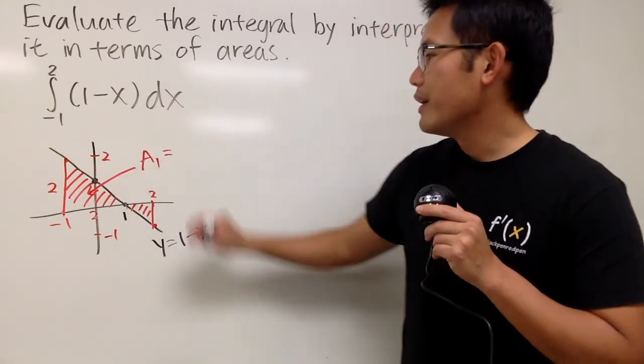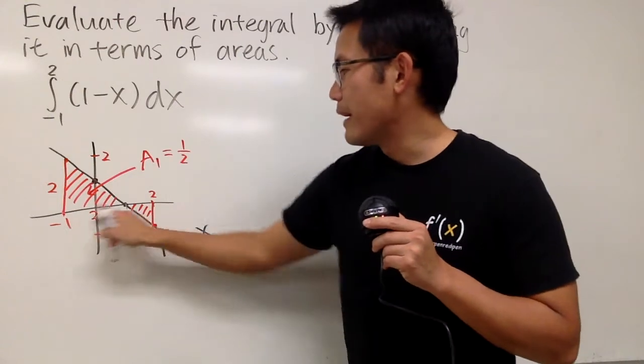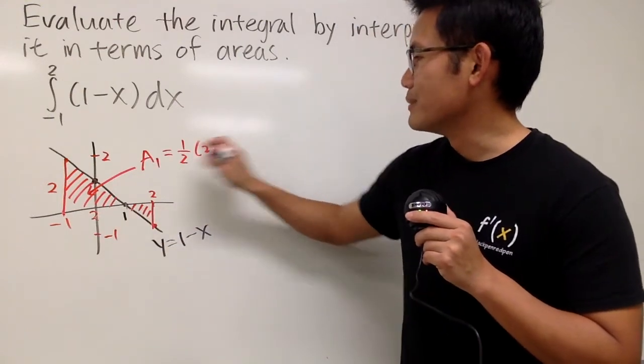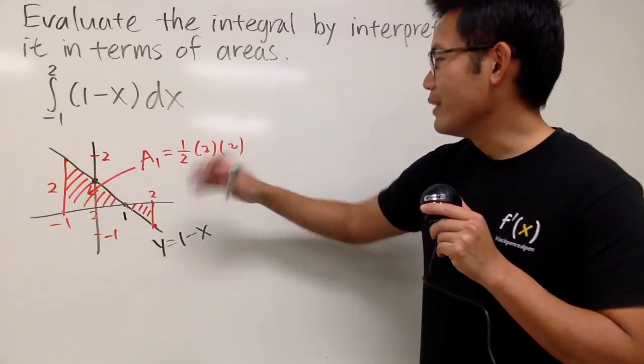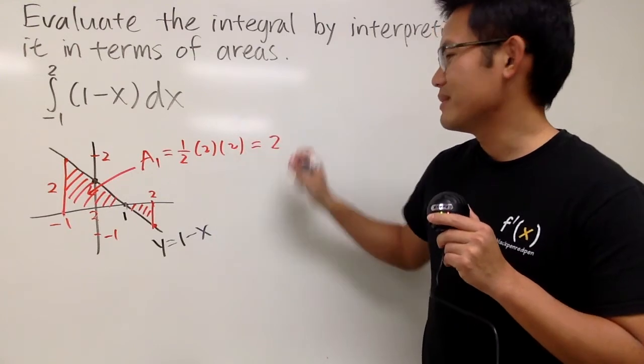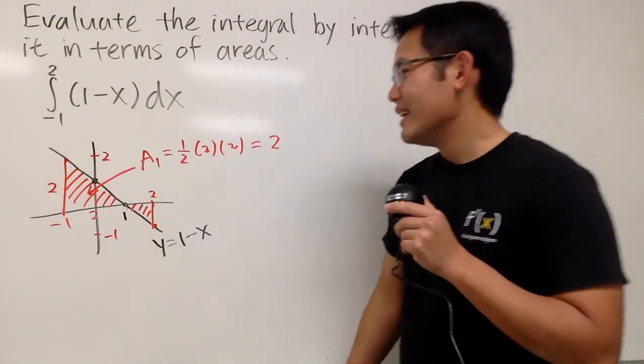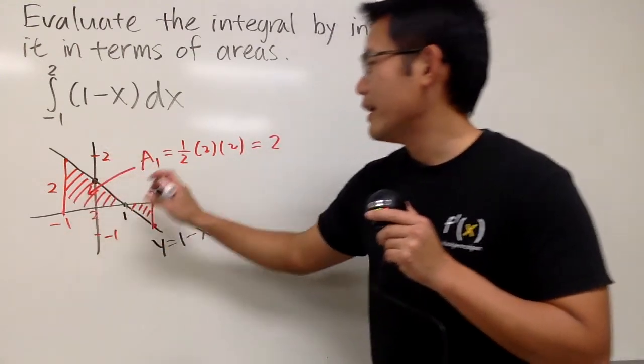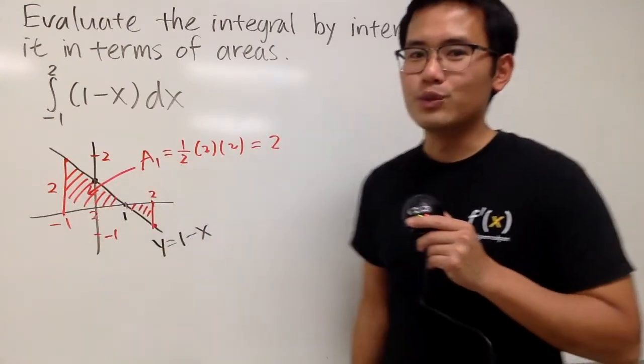And all in all we get 2. Man, a lot of 2's in this picture. So this area right here is just 2, and I say this is A1 because this is the first one that we are doing.